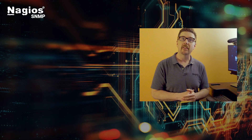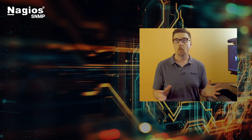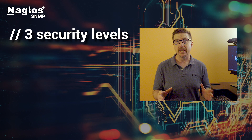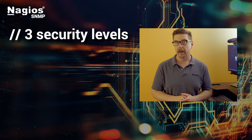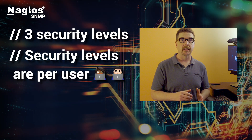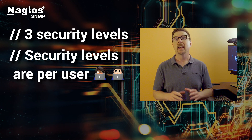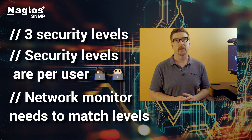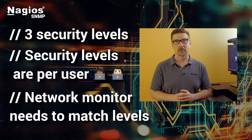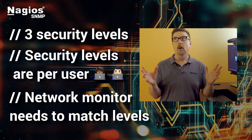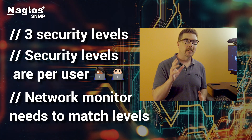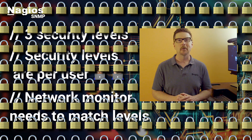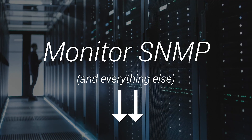That's all you need to know to use SNMP v3 for network monitoring. You learned that there are three security levels that form the basis for SNMP v3 monitoring. You learned that the security levels are configured per user on the device you're monitoring, and that your network monitoring system needs to match this security level in order to monitor successfully. Finally, hopefully you have learned that using the highest security level, along with strong passwords, is absolutely the best way to go. Thanks for watching.